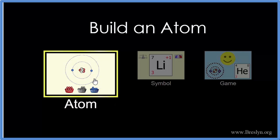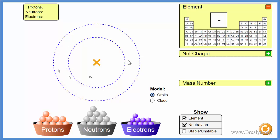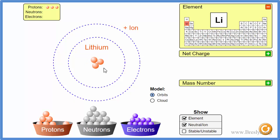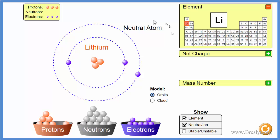Let's build an atom and see. We'll start with lithium — atomic number three, so it has three protons. Three protons, atomic number three — lithium. Right now it's an ion because we only have these positive protons. Let's add some electrons and make it neutral — one, two, three. These cancel out; we have a neutral atom. But we wanted to talk about an ion. Lithium usually loses one electron because it's in group one, to form a positive ion. So here's our lithium ion.